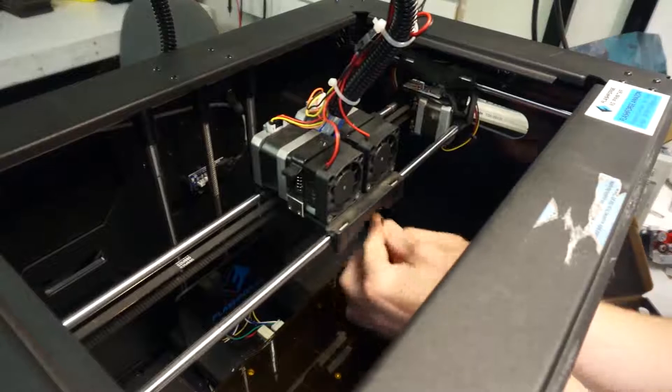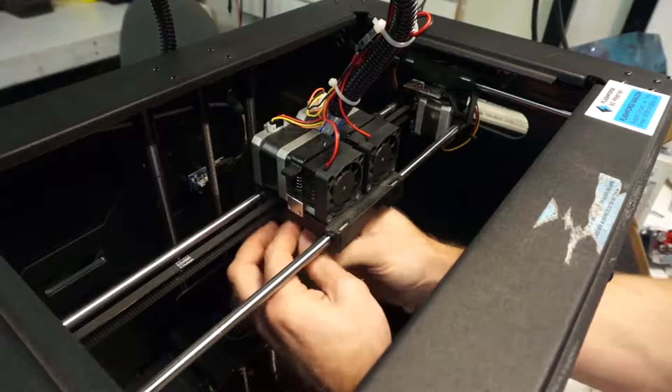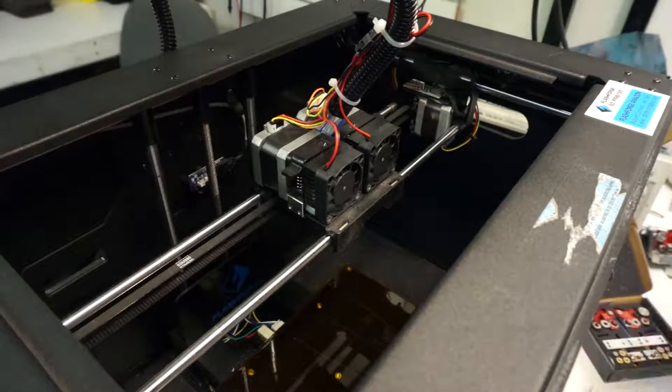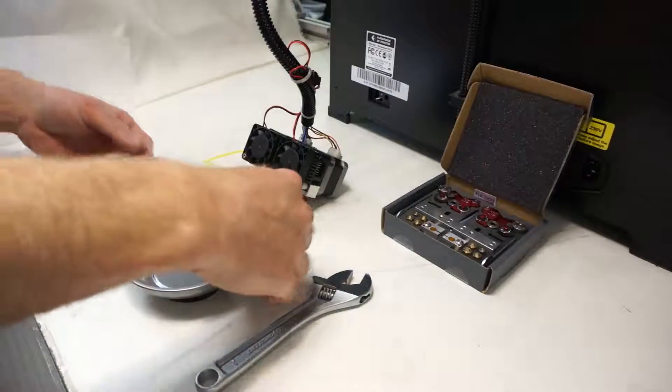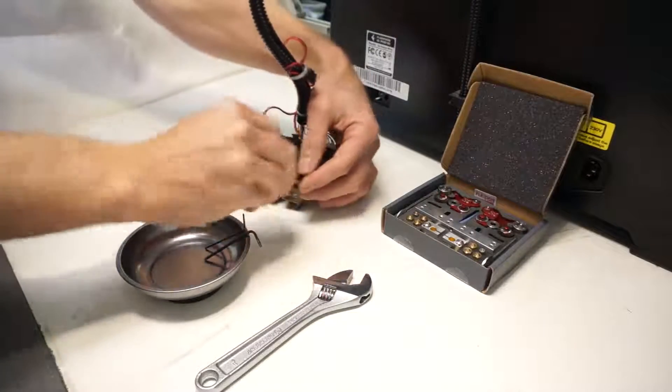So getting right into it, the first thing you want to do is remove the entire extruder assembly from the X carriage by removing the two screws from the bottom of the unit. Then bring the extruder assembly down from the machine onto a clear level working surface.